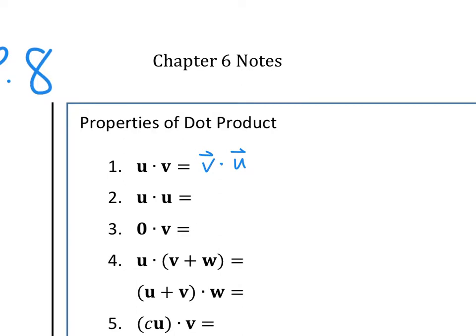The second thing: u dot u. If a vector is dotting itself, it's actually going to be the magnitude squared. So it's a special property — if you take a vector dotting itself, it's the same as the magnitude squared. Next, the zero vector. Zero dot v is actually going to give you zero, and that zero is a scalar, not a vector.